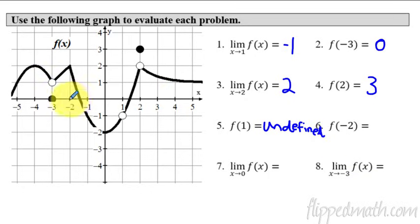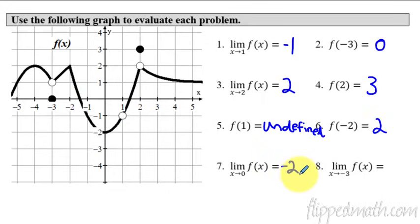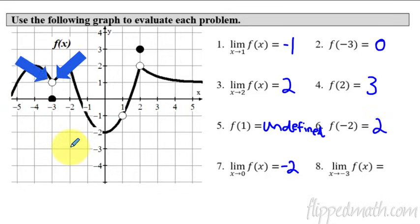F of negative 2: we go to x equals negative 2, the graph is right there with no open dot, so we assume the y value is 2. For the limit as x approaches 0: approaching from both sides, the graph is approaching a y value of negative 2. And the last one — the limit as x approaches negative 3: approaching negative 3 from both sides on the graph, from both sides it's approaching the same y value, which is 1.